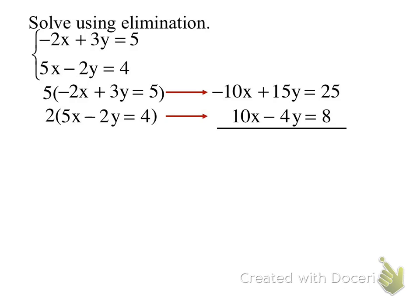Negative 10x and positive 10x is zero. Positive 15y and negative 4y is 11y. 11y equals 33. Divide both sides by 11 and I am left with y equals 3.